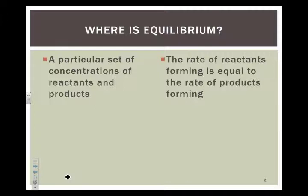We'll begin with talking about where is equilibrium. And it turns out that it can be described a couple of different ways. It is a particular set of concentrations of reactants and products. It's a particular ratio of reactants to products. And it's also the point at which the rate of the reactants forming the products is equal to the rate of the products forming reactants.